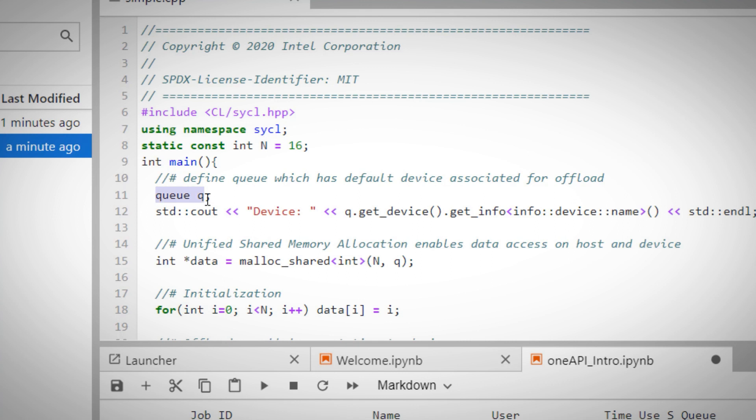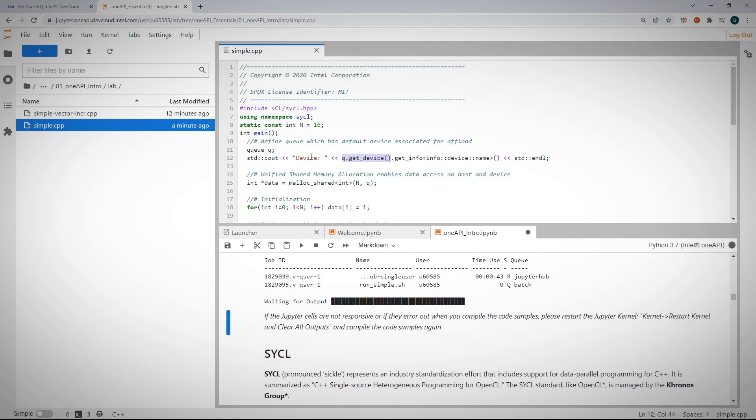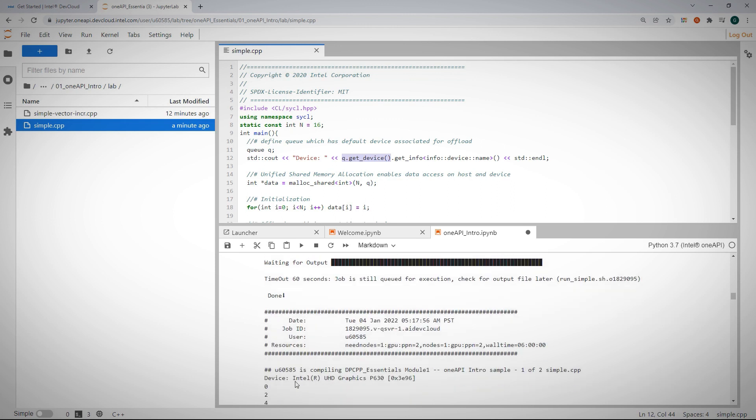This is an execution queue to our accelerator. First thing we're doing is to check which accelerator, which device is connected, and print it out. And the device that is connected is a GPU, a P630 Intel GPU in this case.